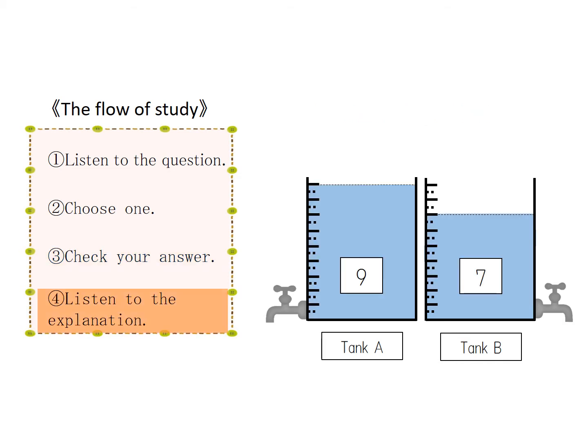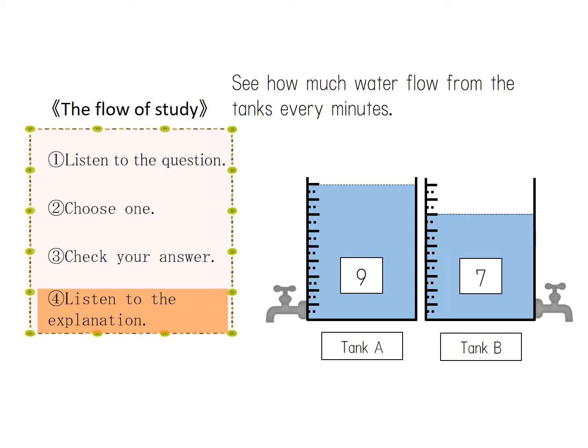We'll explain why. Tank A is filled with 9 units of scale of water, and tank B is filled with 7 units of scale of water. Let's see how much water is flushed from tank A and B every minute.